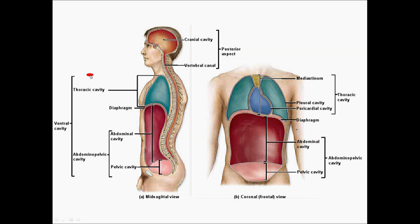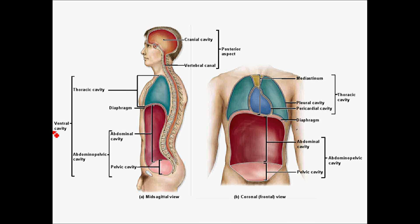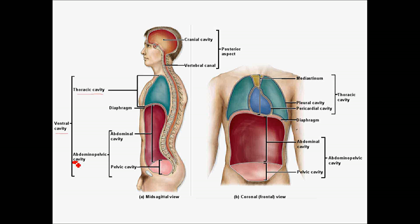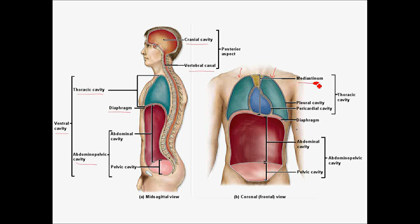Here is a diagram depicting the different cavities that you have within your body. On the ventral side, we have the ventral cavity consisting of the thoracic and abdominal pelvic, separated by the diaphragm. In the posterior aspect we have the cranial cavity and the vertebral cavity. Also keep in mind that the thoracic cavity is divided into equal right and left portions by the mediastinum.